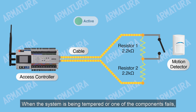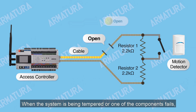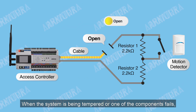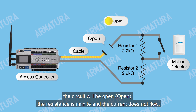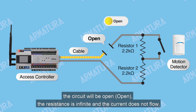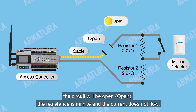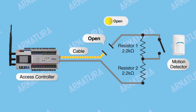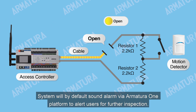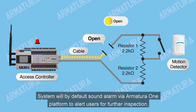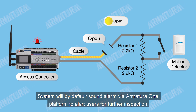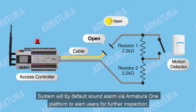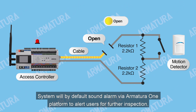When the system is being tampered with or one of the components fails, the circuit will be open, the resistance is infinite, and the current does not flow. The system will by default sound an alarm via the Armatura 1 platform to alert users for further inspection.